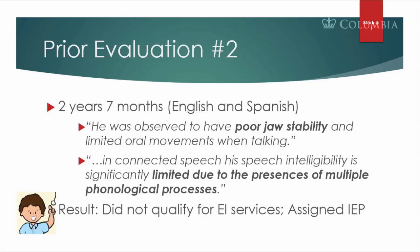Here are some of the conclusions from the second evaluation, at two years, seven months, English and Spanish. He was observed to have poor jaw stability and limited oral movements when talking. In connected speech, his speech intelligibility is significantly limited due to the presence of multiple phonological processes. Result: did not qualify for EI services, but he was assigned an IEP for preschool.